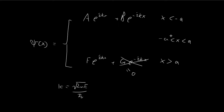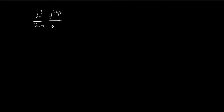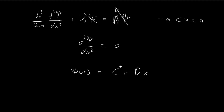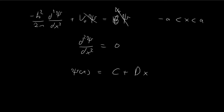For the region when x is between negative and positive a, we solve the time-independent Schrödinger equation. Within this region the energy level equals V₀, so the V₀ terms cancel, leaving d²ψ/dx² = 0. The solution to this differential equation is simply ψ = C + Dx, which you can verify by differentiating twice.